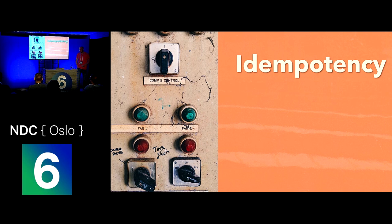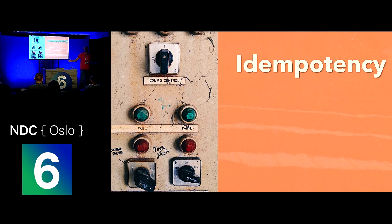Idempotency: all our write operations are idempotent. That saved us when we migrated four years of state from the old NRK TV solution — about 40-50 gigabytes of data. We had a bug, but luckily we had idempotency. We could just re-run the whole import and fix the approximately 20,000 users who had a problem by re-importing everything while the system was running. Nobody noticed except that they got their missing favorites. Very happy we did that.